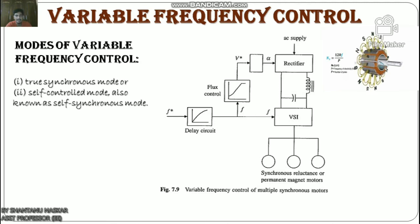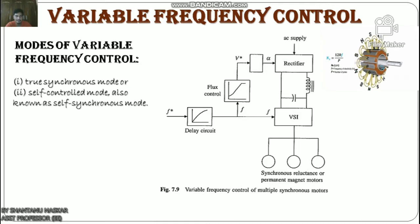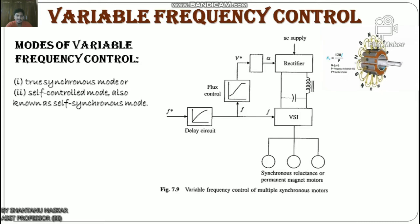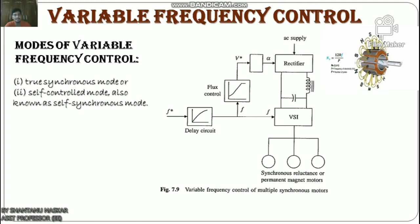This scheme is commonly used for control of multiple synchronous reluctance or permanent magnet motors in fiber spinning, textile, and paper mills where accurate speed tracking between the motors is required. Since synchronous speed is directly proportional to frequency, motor speed can be controlled by varying the frequency. Constant flux operation below base speed is achieved by operating the motor with a constant V/f ratio, which is increased at low speed to compensate for the stator resistance drop.